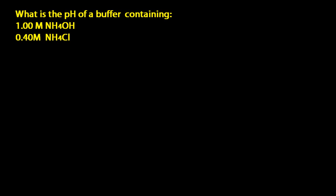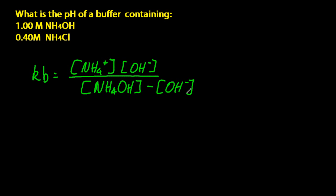Next question. So this one is about a basic buffer, so let's write out the Kb equation, and I'm going to assume the OH- concentration is negligible compared to the ammonium hydroxide concentration, which means I'm going to ignore it by erasing it.